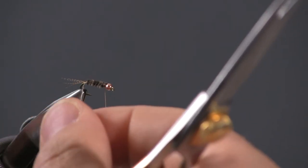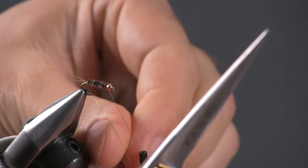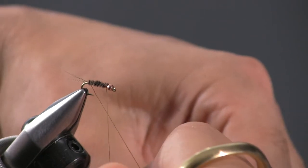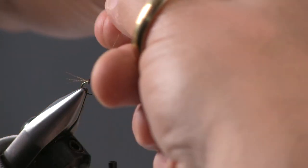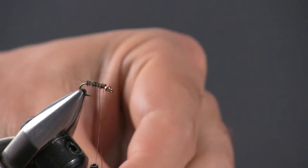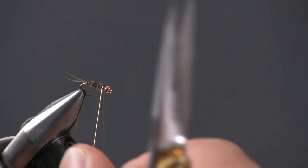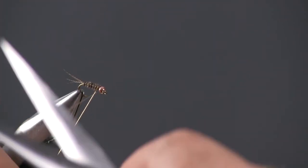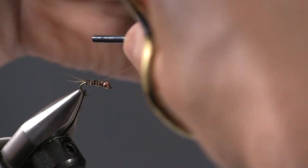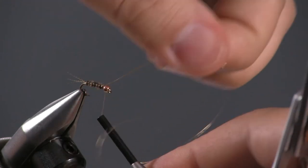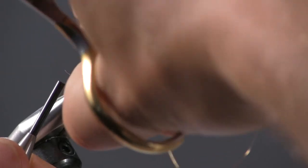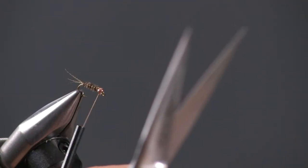And now I'm going to counter wrap with my gold wire. And this gold wire goes counter or opposite direction of what direction those turkey tail feathers went. This helps to secure in your tail fibers so that if a fish's tooth gets in there, it doesn't pull apart with the first fish. And just even wraps with that gold wire. And then we're just going to tie that off and then just helicopter to break that wire off.